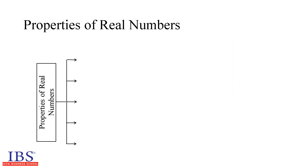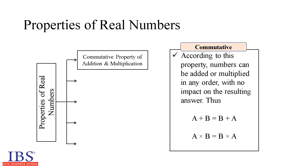Let us have a look at the properties of real numbers. Commutative property of addition and multiplication: according to this property, numbers can be added or multiplied in any order with no impact on the resulting answer. That is, a plus b equals b plus a, and a into b equals b into a.